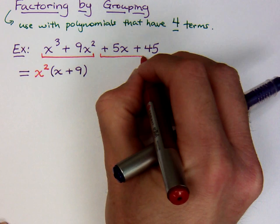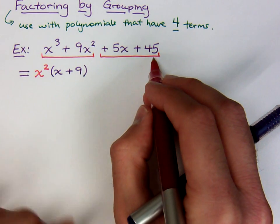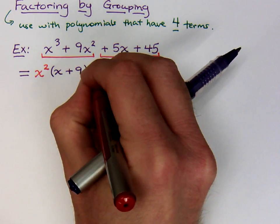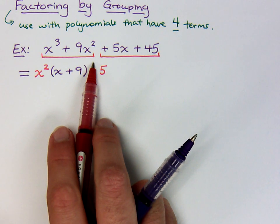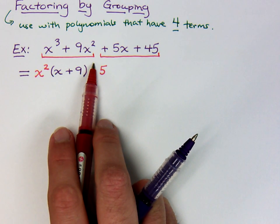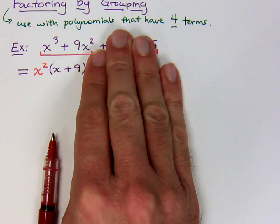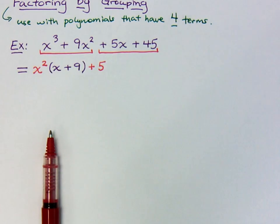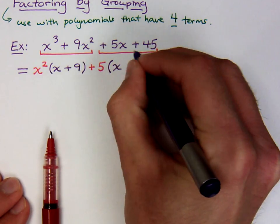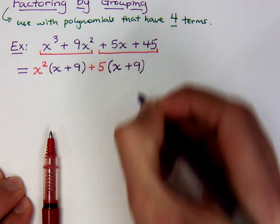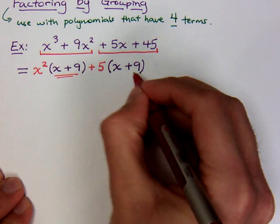Look at the second group. The second group consists of plus 5x plus 45. The common factor here is 5. Pay attention — whatever this sign is, is going to be the sign you have right here. So my common factor is a plus 5. If I take out the 5, 5x divided by 5 is x, and 45 divided by 5 is plus 9. So you see that you have the common factor here of x plus 9.